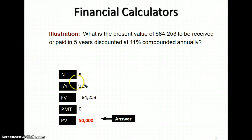So if I plug this information into my calculator, N is 5, 11% is I/Y, future value is 84253. I then solve for the present value and I get $50,000.